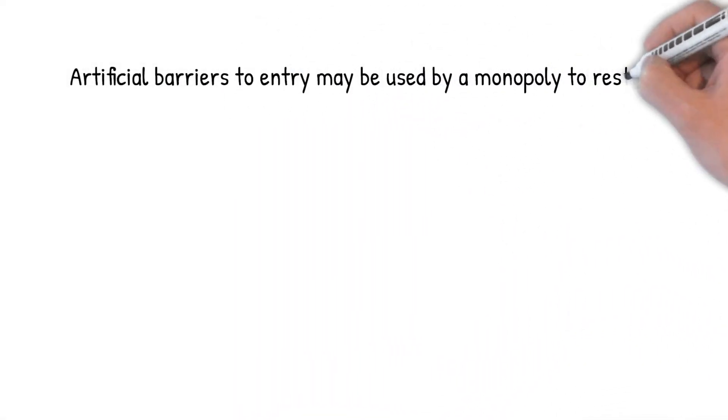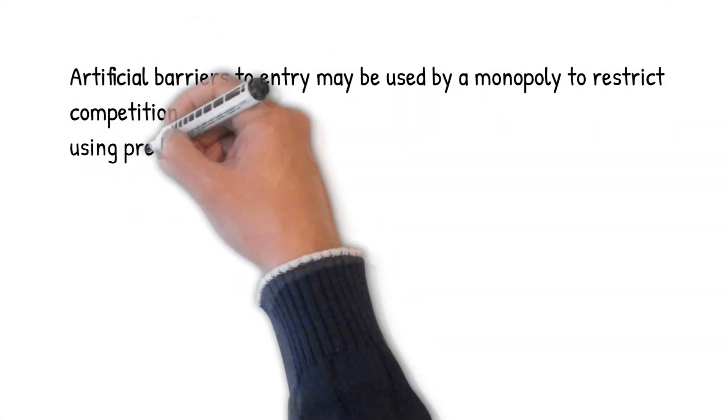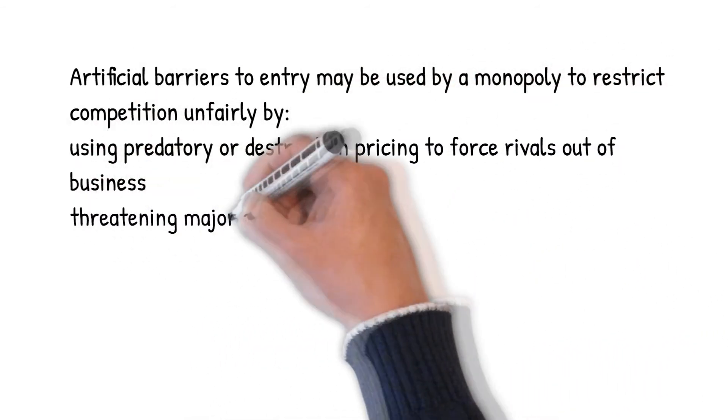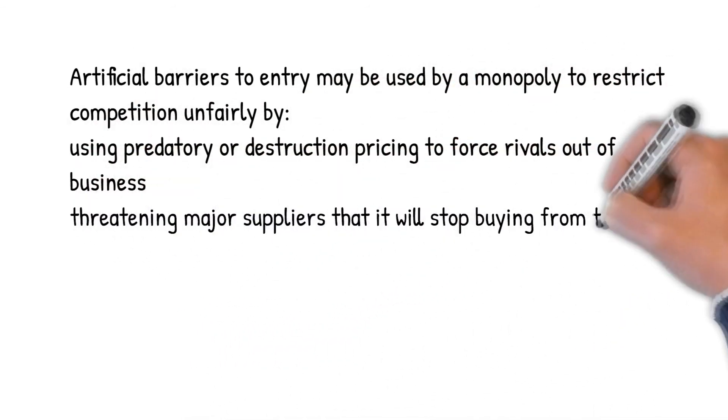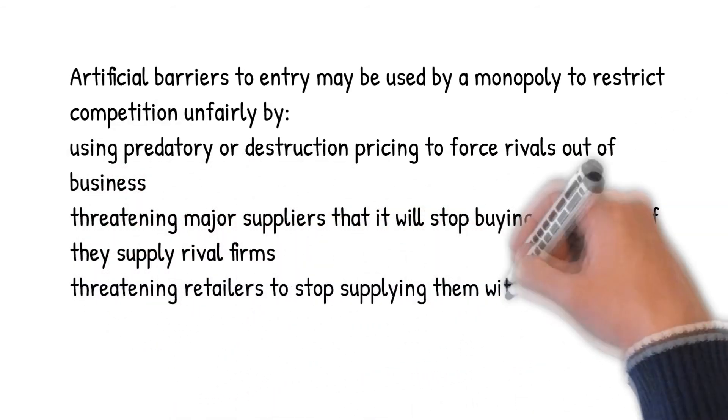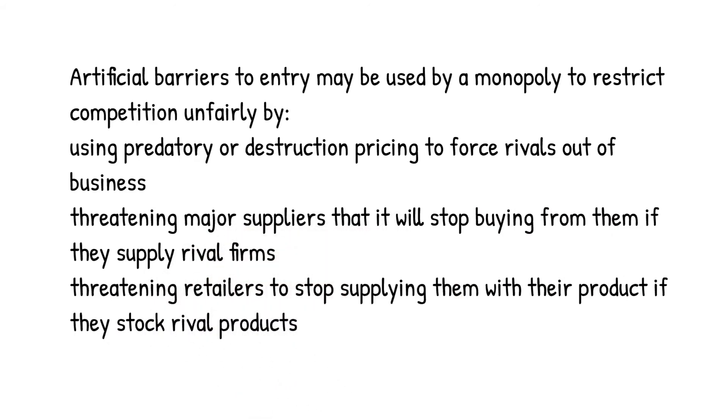How do monopolies restrict competition? Artificial barriers to entry may be used by a monopoly to restrict competition unfairly by using predatory or destruction pricing to force rivals out of business, threatening major suppliers that it will stop buying from them if they supply rival firms, and threatening retailers to stop supplying them with their product if they stock rival products.